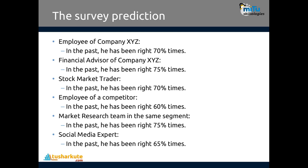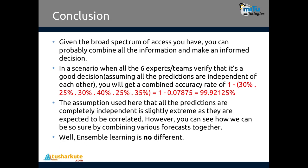How much accuracy is achieved if all results are independent of each other? Given the broad spectrum of access, you can combine all information and make an informed decision. When all six experts specify it is a good decision and all predictions are independent, you get a combined accuracy of 1 minus the product of all errors: 1 minus (0.30 × 0.25 × 0.20 × 0.40 × 0.25 × 0.35). The combined error is 0.07875, so the combined accuracy will be 99.92125 percent — the highest accuracy achievable when all results are combined and independent.